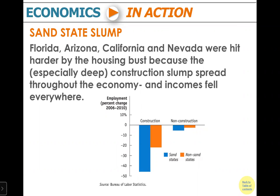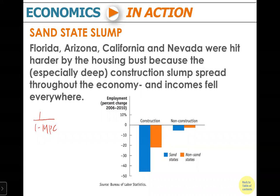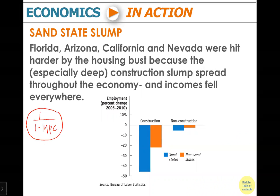So what have we learned? We just learned the multiplier. The multiplier is 1 over 1 minus MPC. This mechanically tells you that if we have a $1 increase in spending in the economy, you're going to see a chain effect, and the total increase in spending is going to equal 1 over 1 minus MPC, which is greater than 1 because MPC is positive.